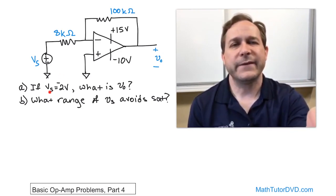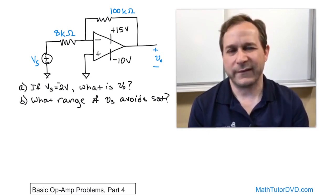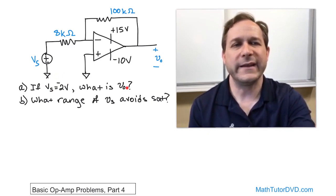Second thing is, let's take a look at what the problem is. If the voltage source is negative two volts, it's supposed to be a negative there. I know it looks a little weird. Negative two volts, what is the output?